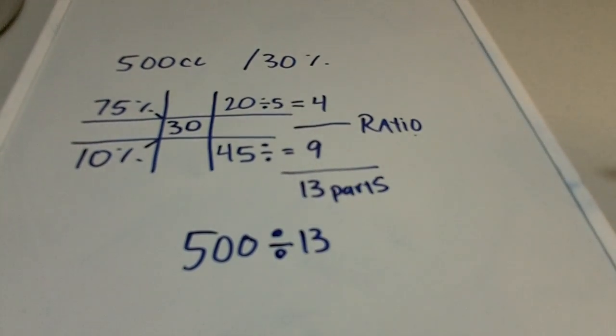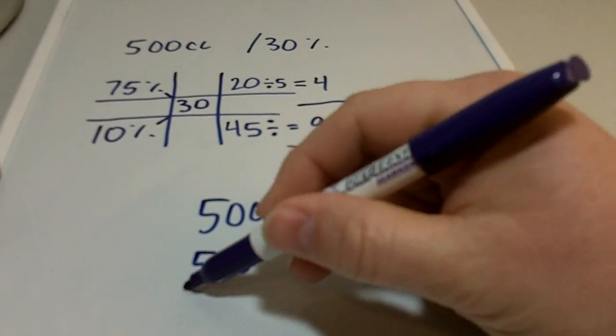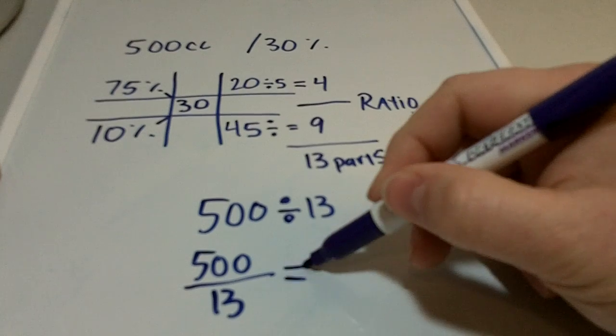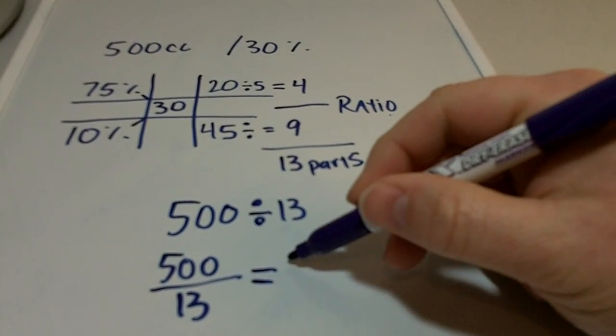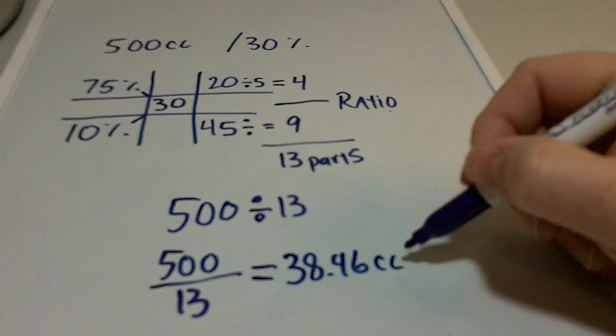So now I have 13 parts and I want 500 cc's. So I take 500 and I divide it by the 13 parts. You could either do it that way or you could write 500 over 13. Either way, it equals 38.46 cc per part.